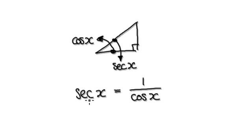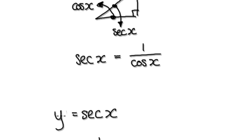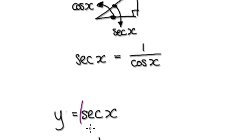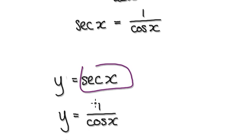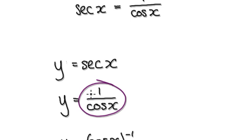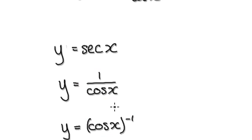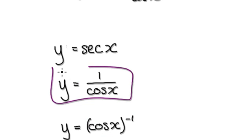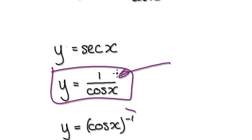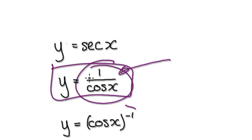To differentiate this, let's imagine y equals secant of x. We can write secant of x as 1 over cos of x, and then rewrite this in a form suitable for the chain rule. You can also use the quotient rule — it's up to you how you do it — but somehow differentiate this.